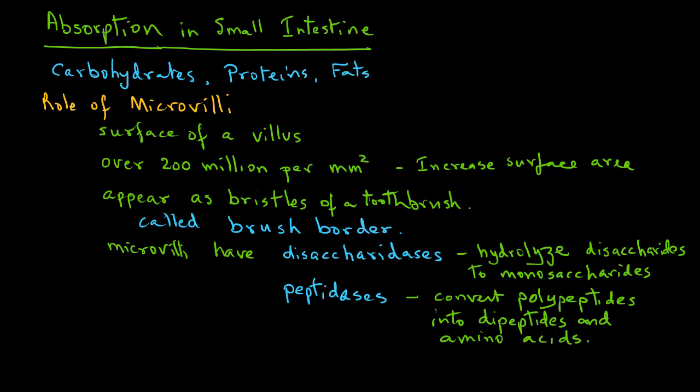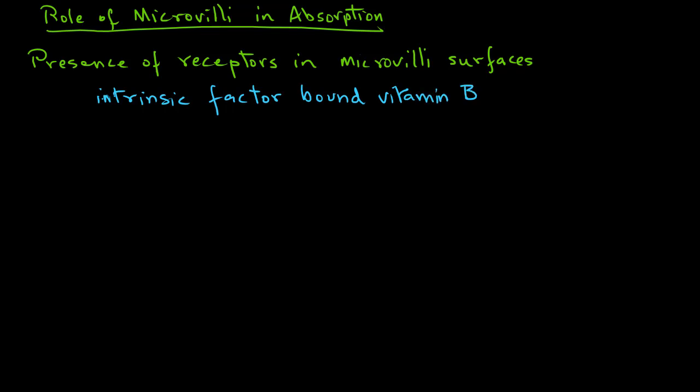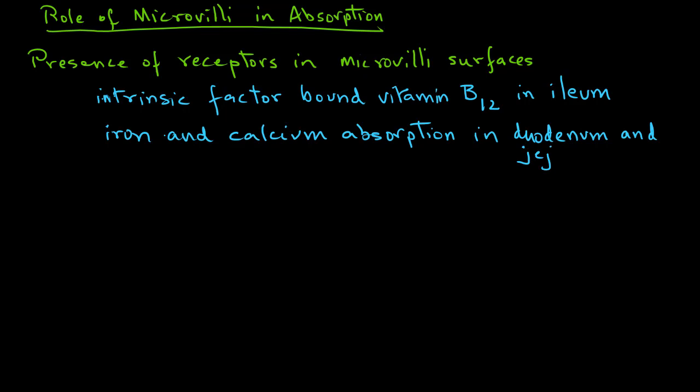There are also receptors present on the microvilli surfaces that help in absorption of specific substances in different parts of the small intestine. For example, in the ileum, the receptors absorb the intrinsic factor bound vitamin B12. And in the duodenum and jejunum, they help in absorption of iron and calcium.